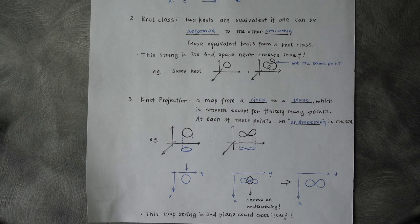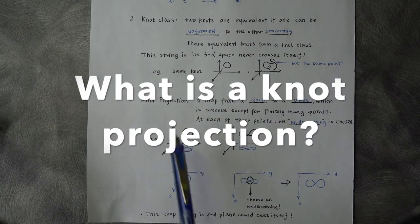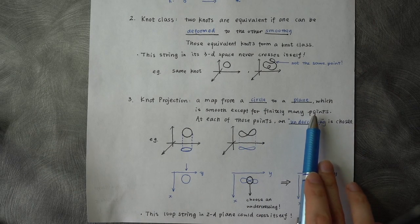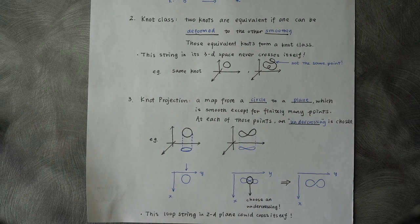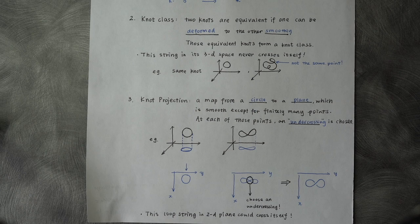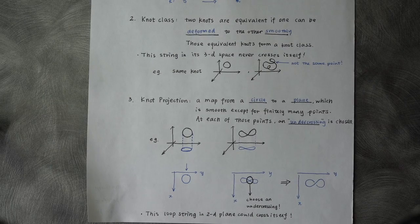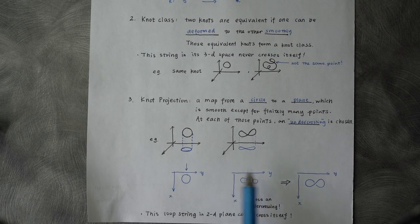So we introduce this 2D object here, knot projection. We define knot projection as a map from a circle to a plane, which is smooth except for finitely many points. At each of those points, an inner crossing is chosen. So let's take a look at those projections.